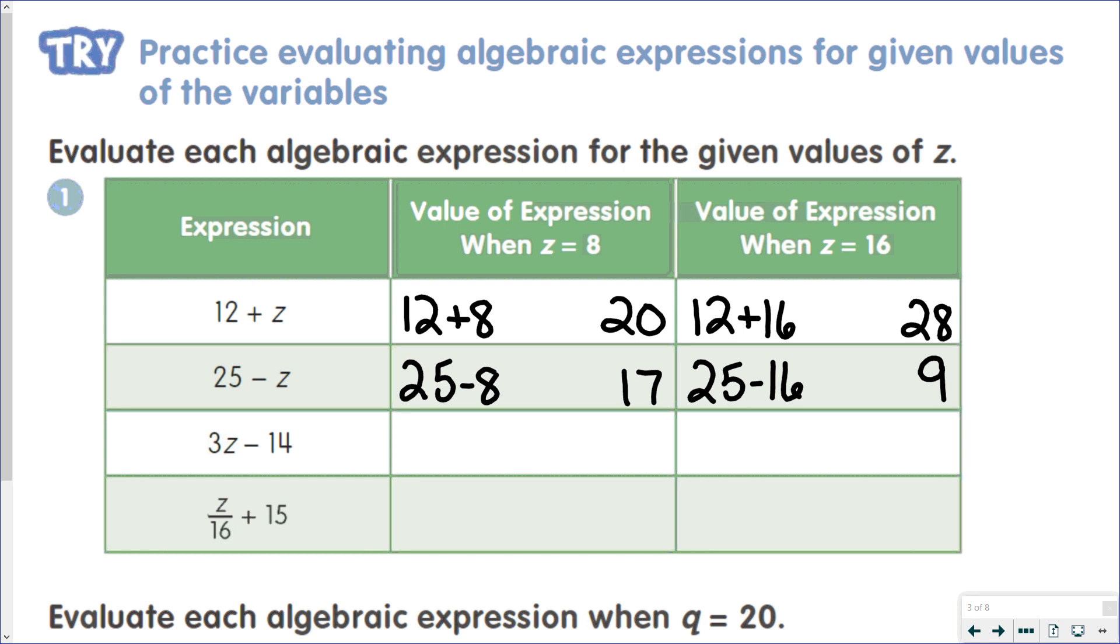3Z minus 14 means we're going to do 3 times 8 minus 14. 3 times 8 is 24, and 24 minus 14 is 10. And then when Z equals 16, we'd have 3 times 16 minus 14. 3 times 16 is 48. 48 minus 14 is 34.